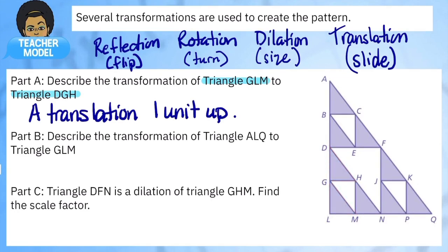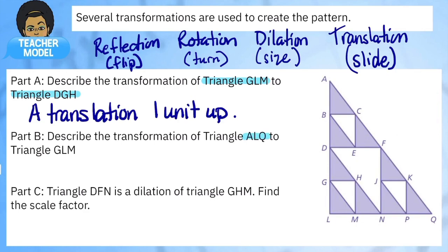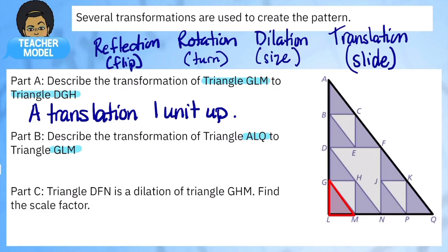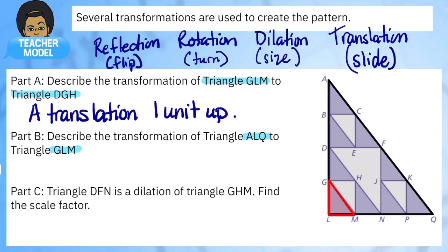Let's jump into the second one. We have triangle ALQ to GLM. Here's ALQ, and in red here's GLM. Looking from black to red, what kind of transformation is this? It's absolutely not a flip, not a rotation, not a translation — it is a dilation, and I can tell because of the size difference. It is contracting, getting smaller.